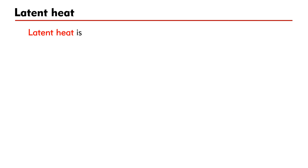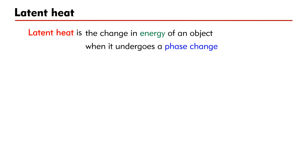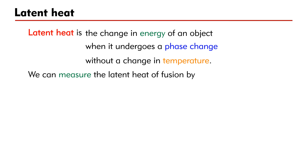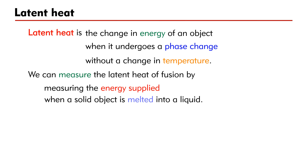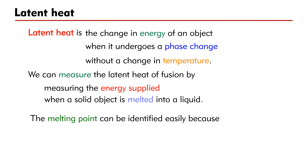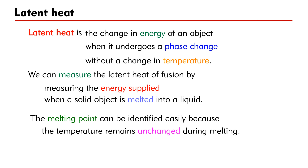According to its definition, latent heat is the change in energy of an object when it undergoes a phase change without a change in temperature. Based on this, we can measure the latent heat of fusion by measuring the energy supplied when an object is changed from solid to liquid. The melting point can be identified easily because the temperature remains unchanged during melting.